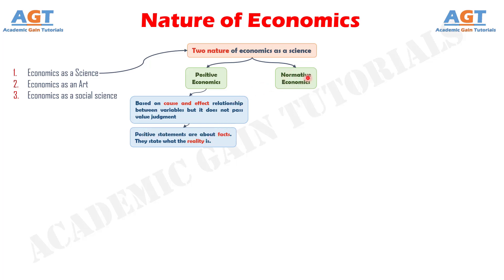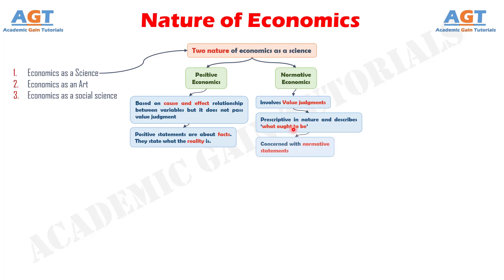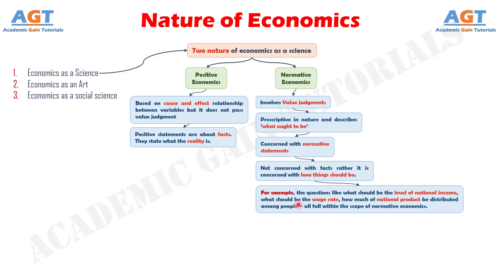Number two, normative economics — as normative economics or science, economics involves value judgments. It is prescriptive in nature and describes what ought to be or what should be. Normative economics is concerned with normative statements. In this case, economics is not concerned with facts; rather, it is concerned with how things should be. For example, questions like what should be the level of national income, what should be the wage rate, how much of national product should be distributed among people — all fall within the scope of normative economics. Thus, normative economics is concerned with welfare propositions. The above discussion shows that economics is both positive as well as normative in nature when we treat economics as a science.